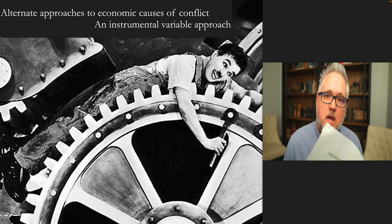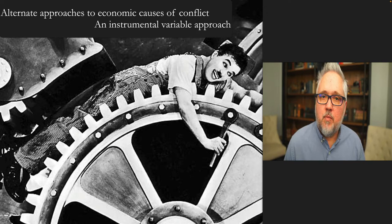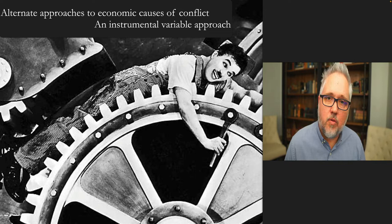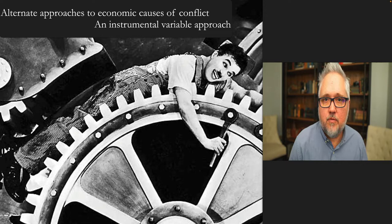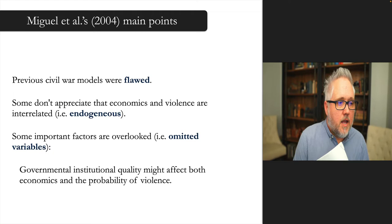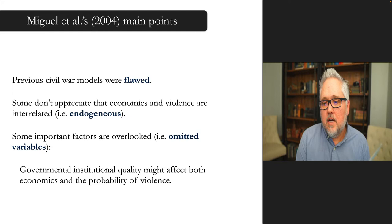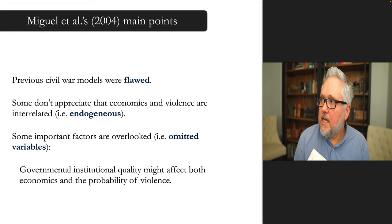That brings me to the Miguel et al. 2004 piece, in which they come up with an instrumental variable approach to look at economic growth and conflict, trying to control for the potential that the relationship goes the other direction. Their main points are that previous civil war models are flawed — they don't appreciate that economics and violence are interrelated. We use a fancy term for that: endogenous relationships, or endogeneity.